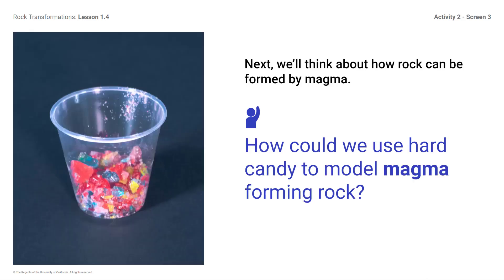Next, we'll think about how rock can be formed by magma. How could we use hard candy to model magma forming rock? You might respond: melted candy would represent magma, and when it cools, it would form new rock.